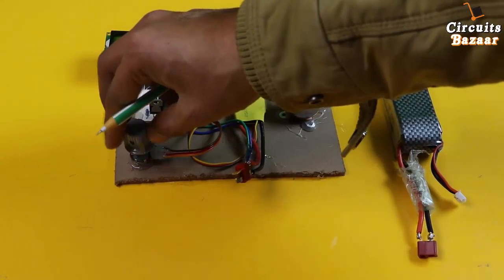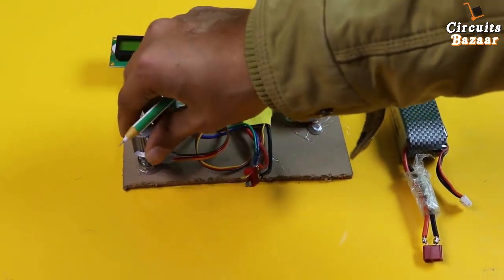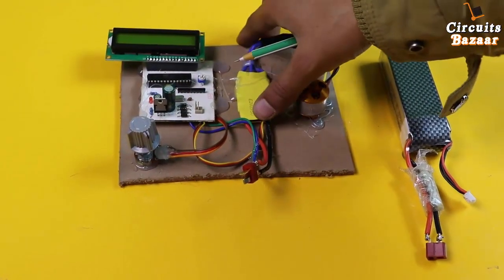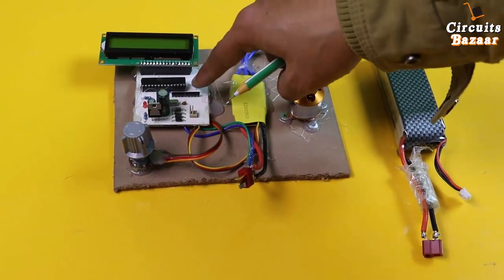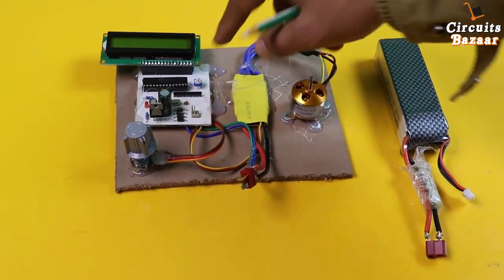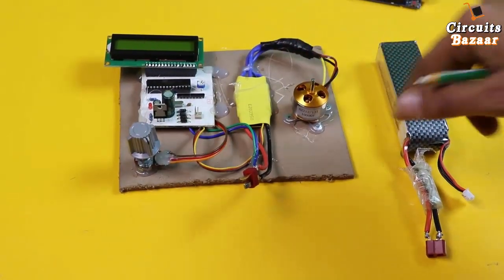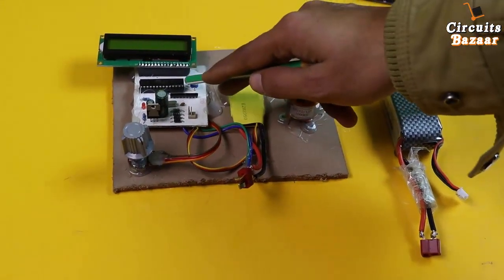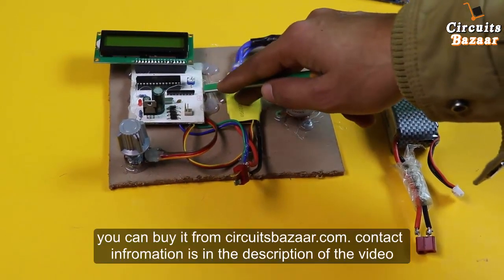This potentiometer will vary the speed of the motor. This LCD displays information like the speed percentage or throttle percentage. Again, this is the ATmega328 board which I've already explained.